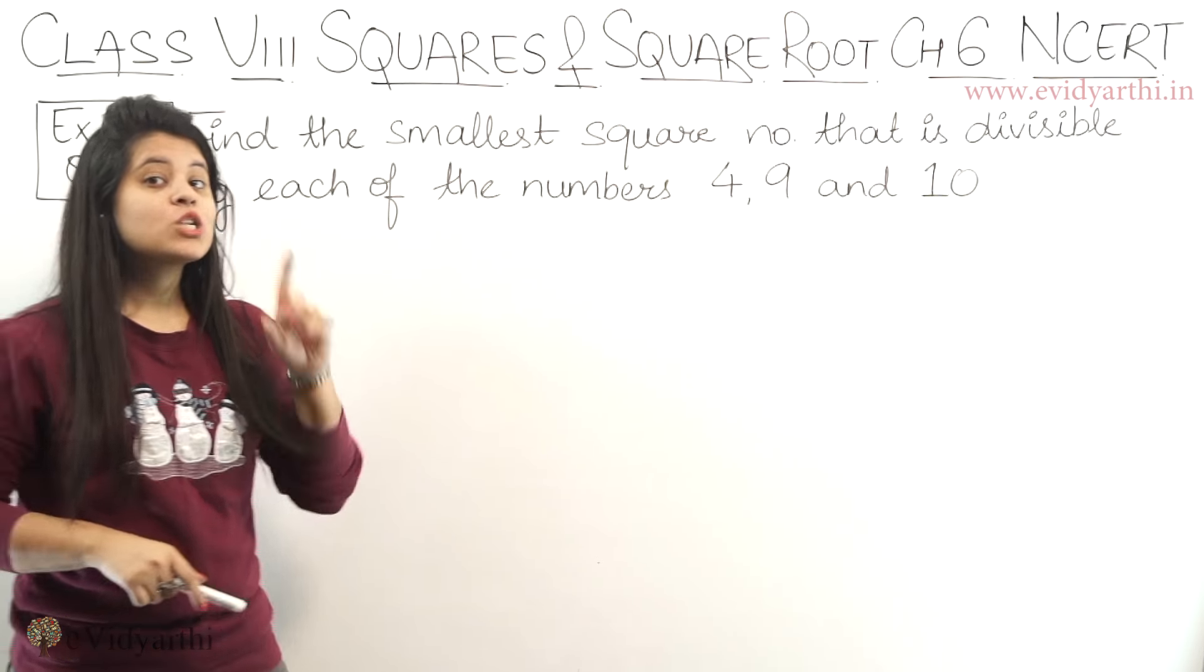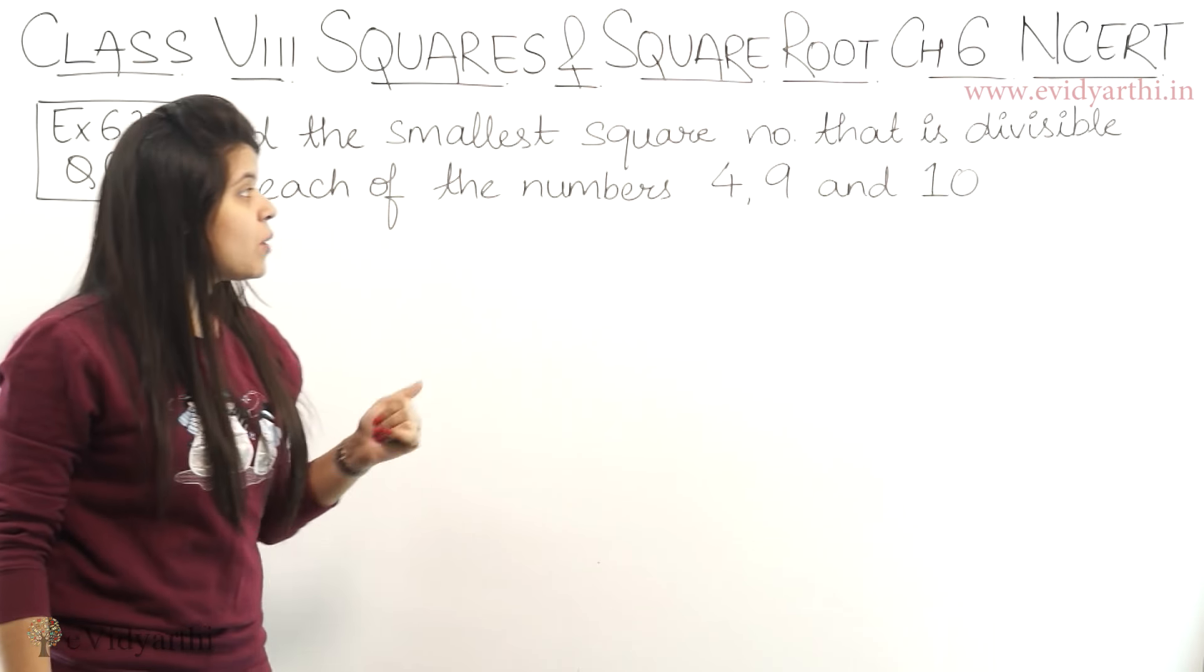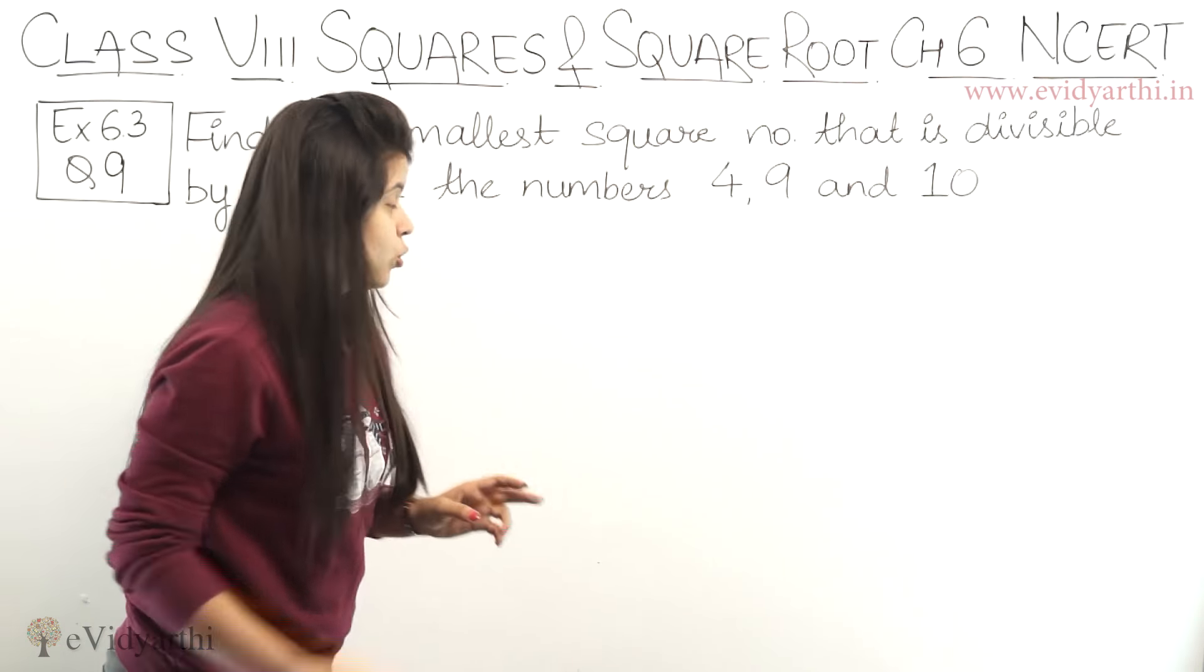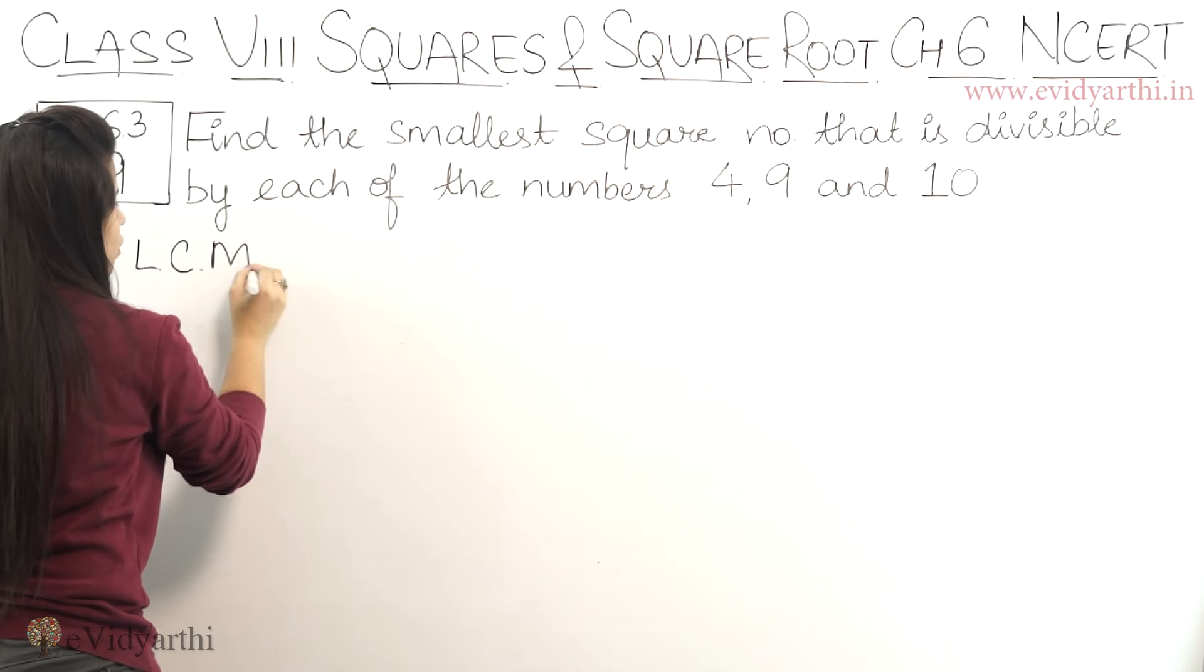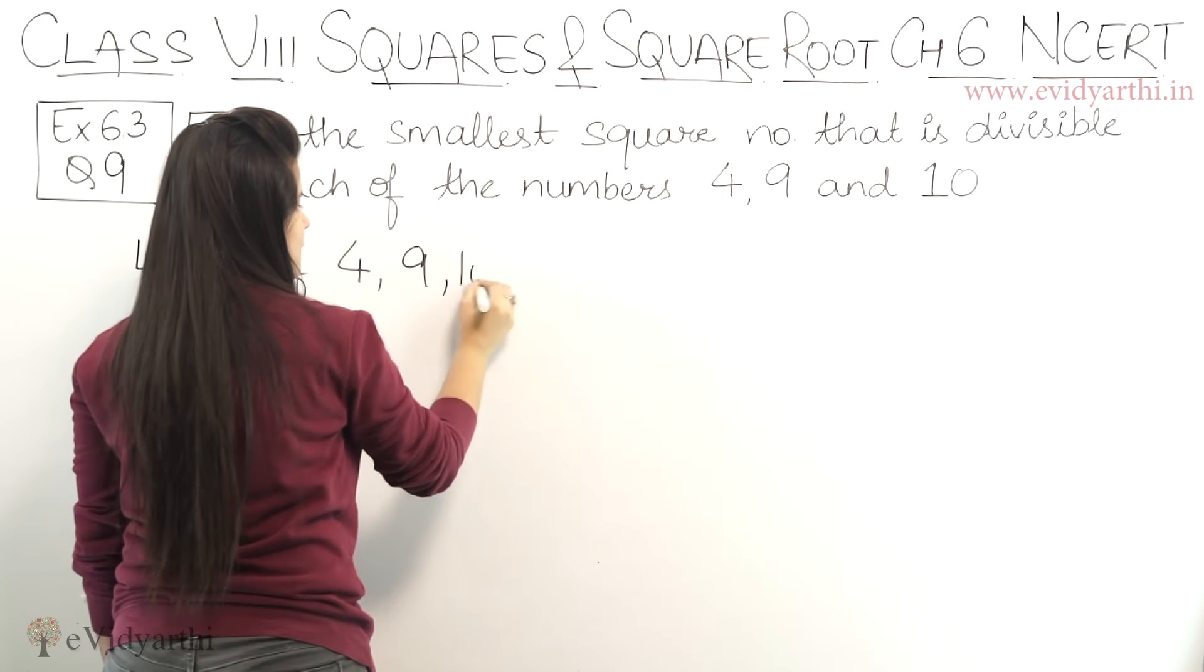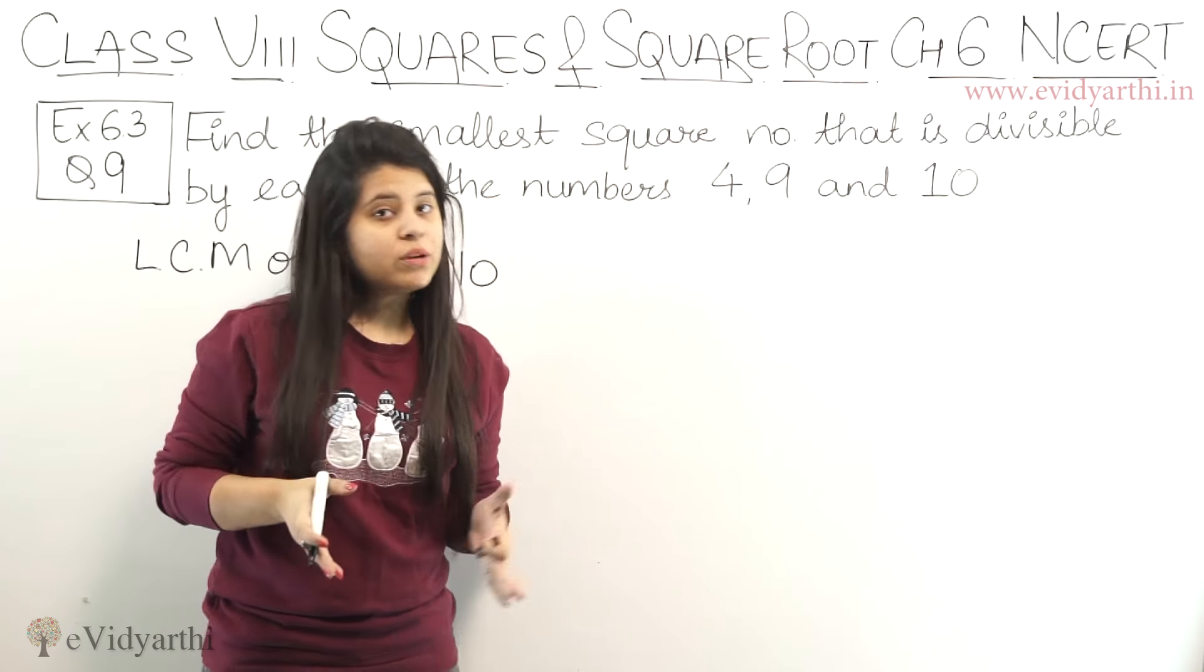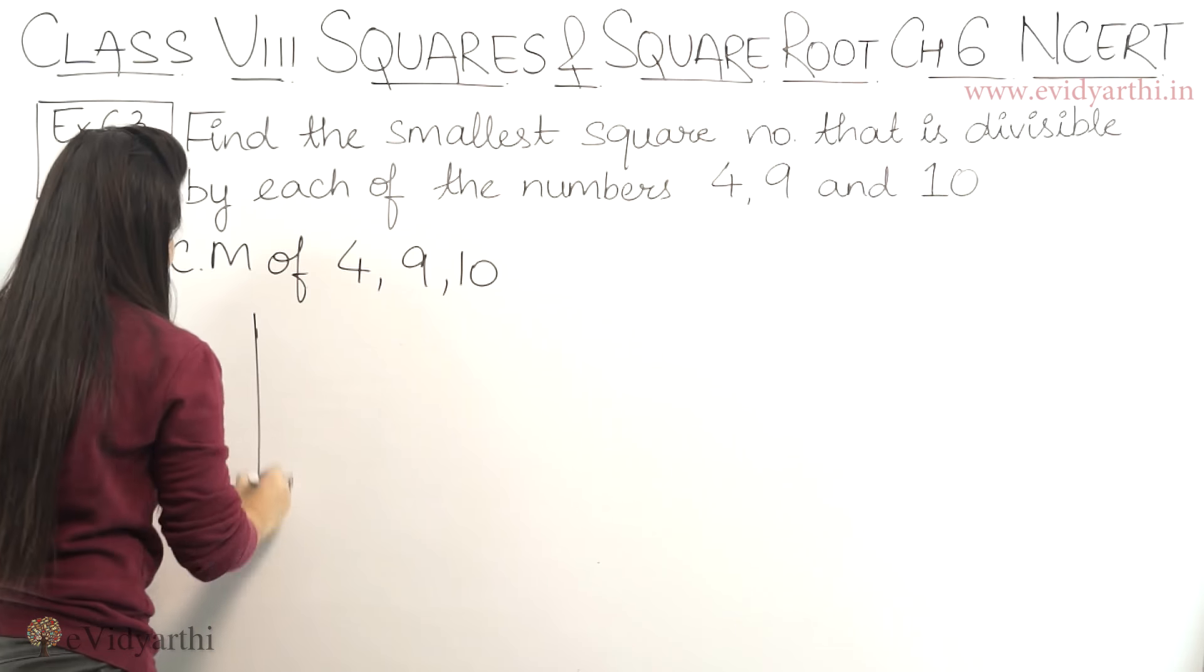So you have smallest square number - remember, square number - which is divisible. For that we need to find the LCM of 4, 9, and 10. The LCM will be the number which will be divisible. So let's find the LCM.